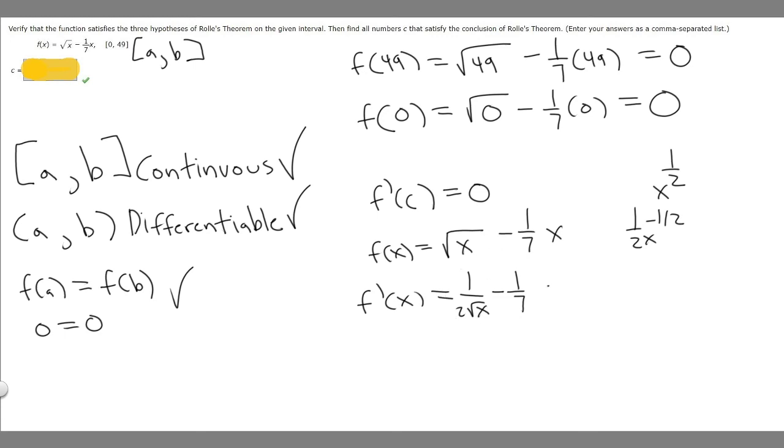And so what we want to do is set this equal to 0. So what I'm going to do is move this to the other side, the minus 1 over 7. So we have 1 over 2√x is equal to 1 over 7. And so what we could do here is just multiply both sides by 2√x times 7. So basically these are going to cancel. So we're just going to get 2√x is equal to 7.